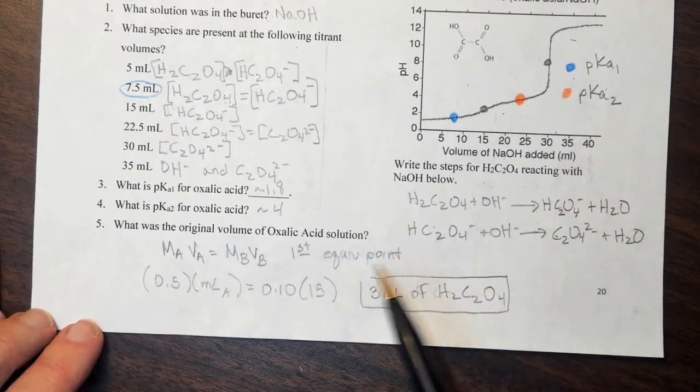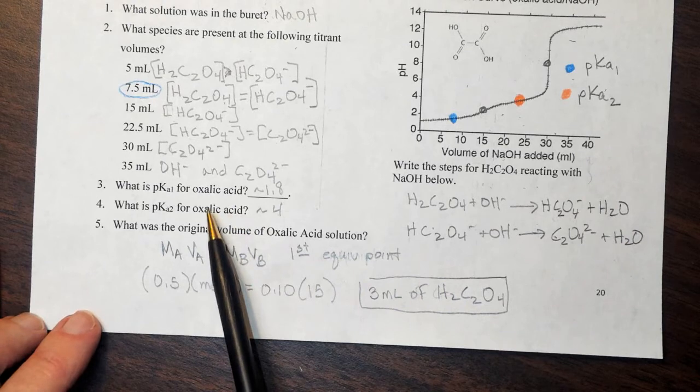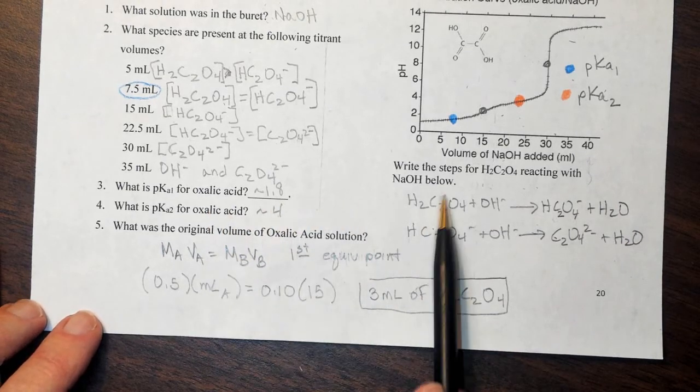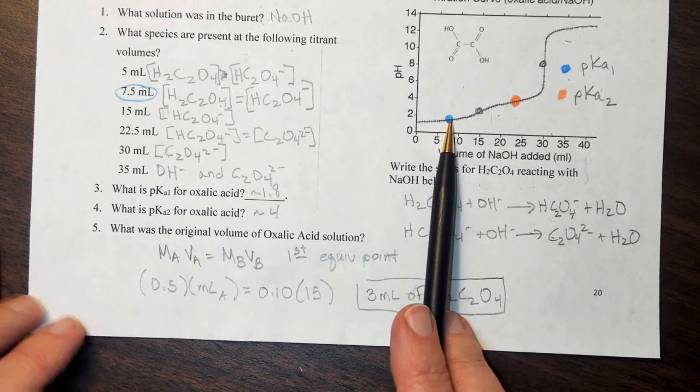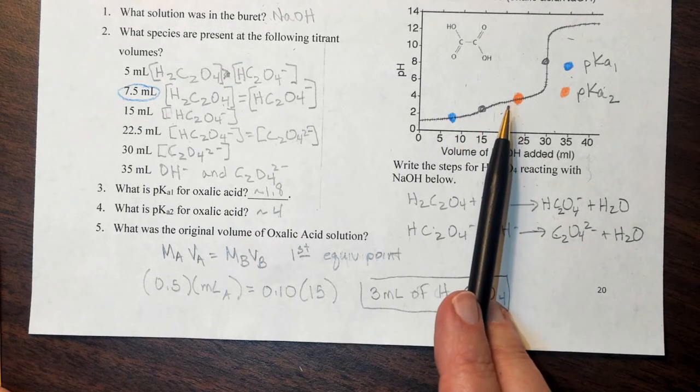So in terms of getting the value for pKa1, I estimated that it was about 1.8, and then the pKa for the oxalic acid was about 4.